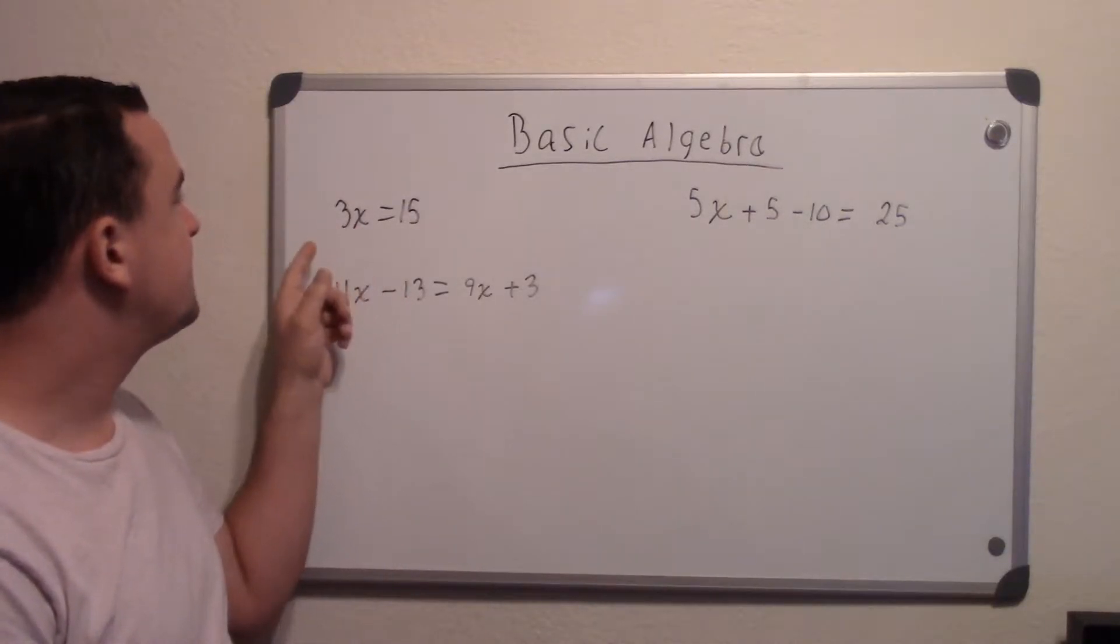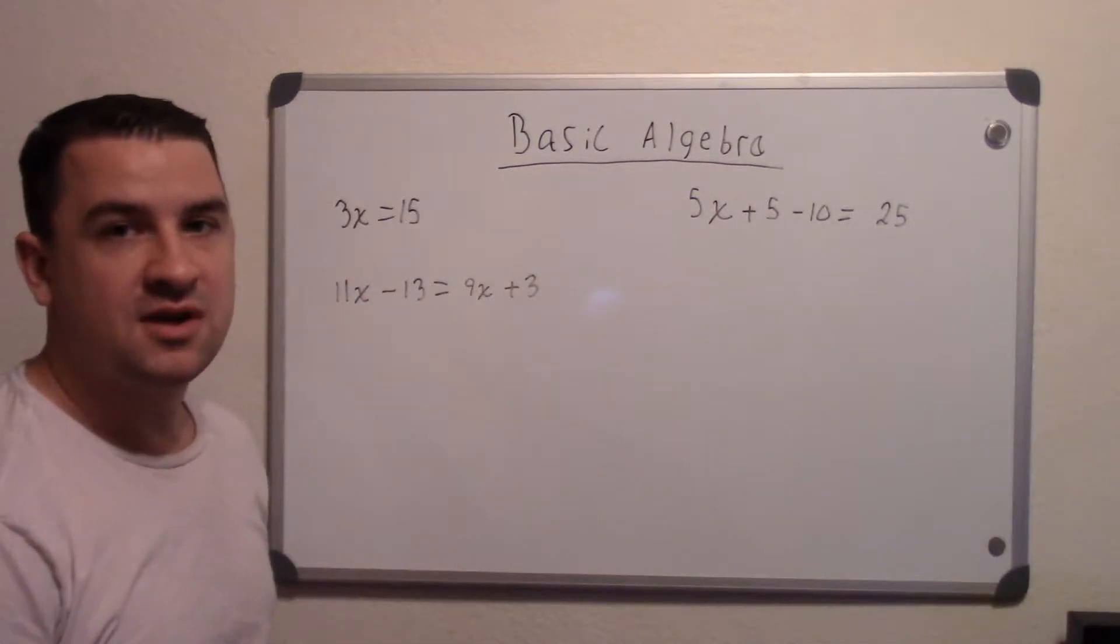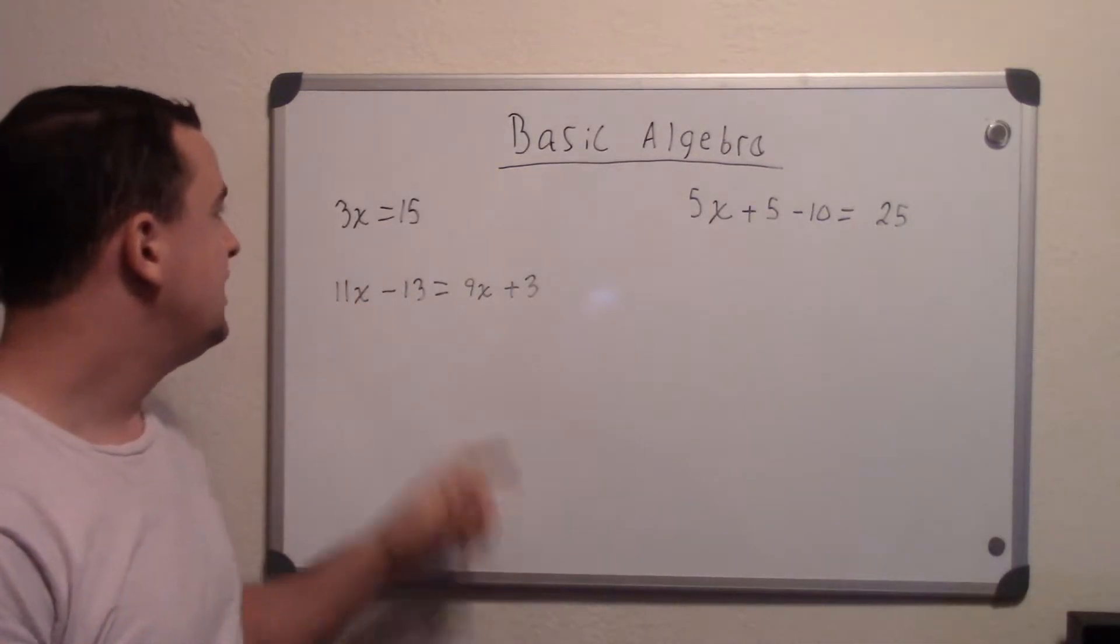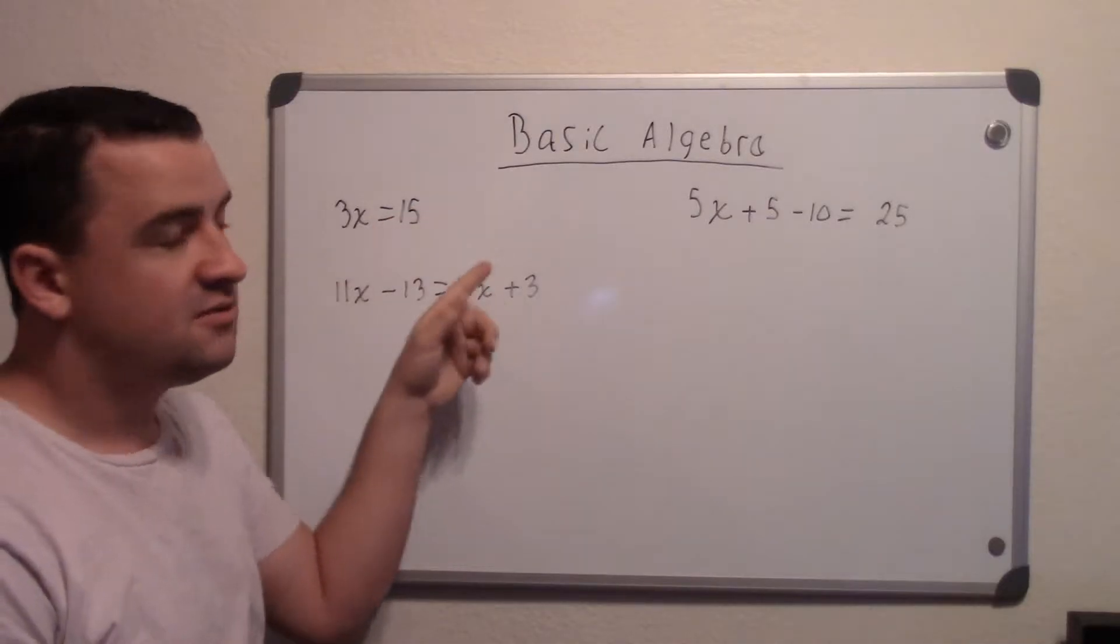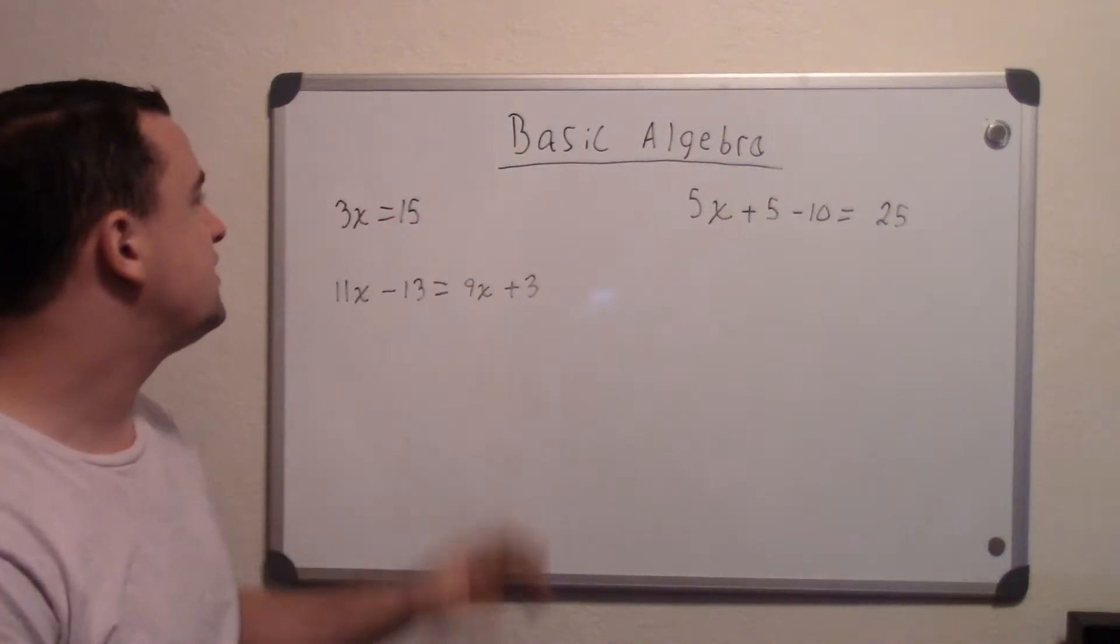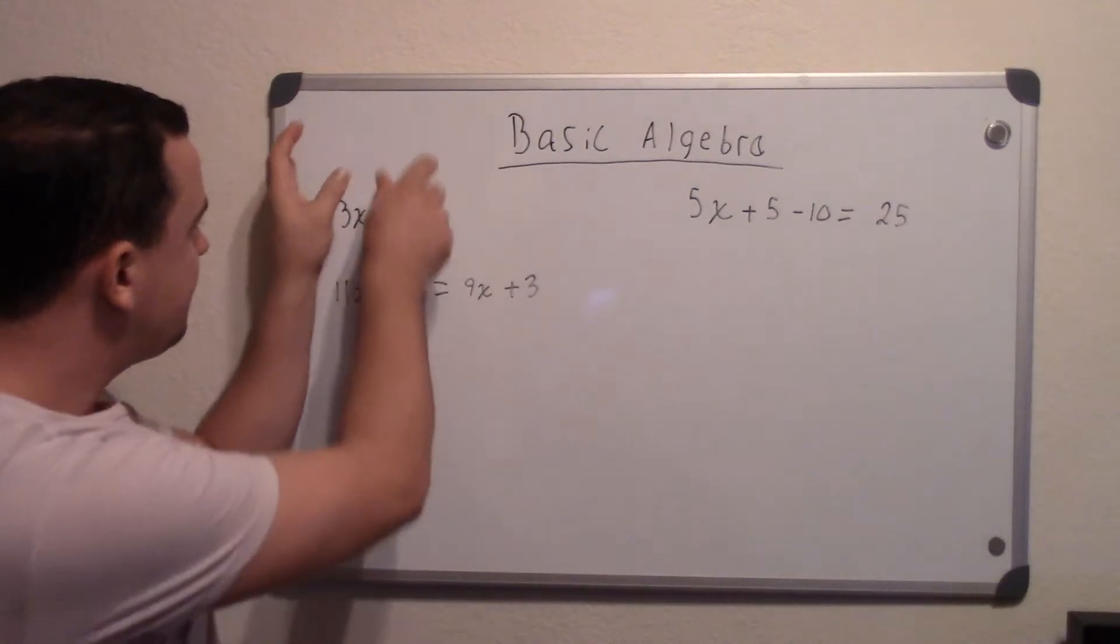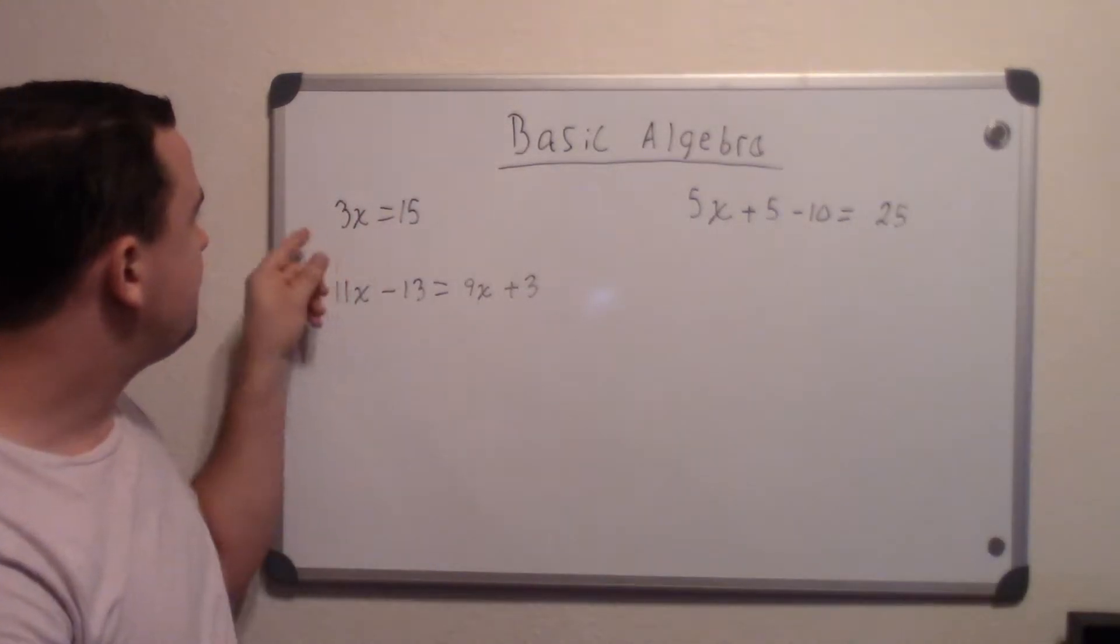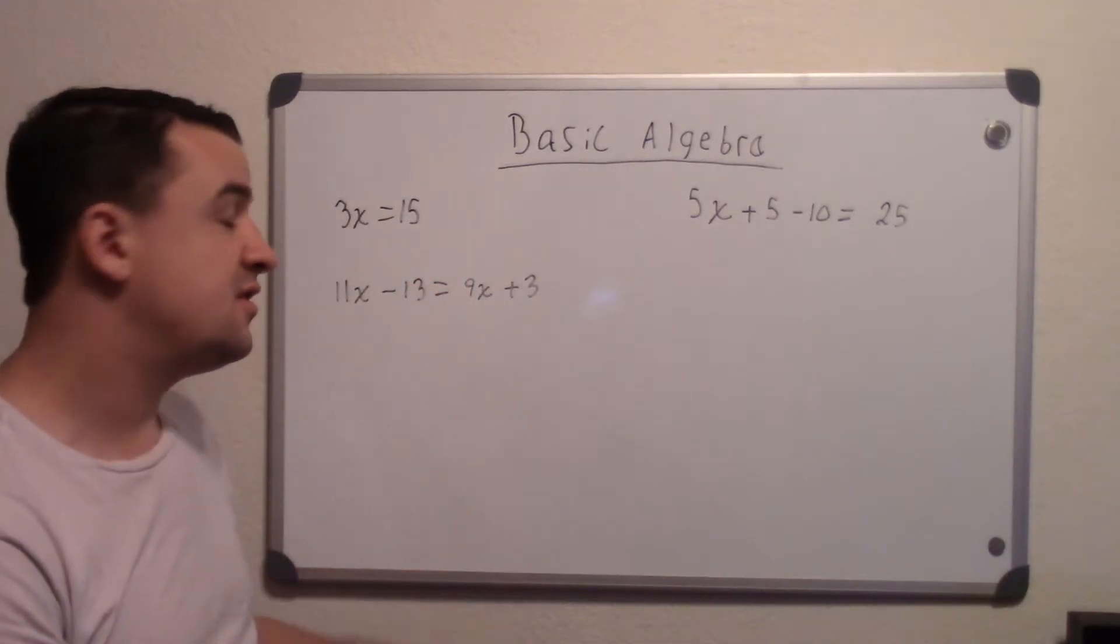So x is being multiplied by 3. The opposite of multiplication is division. So we're going to divide by 3. And whatever you do to one side, you have to do the same thing to the opposite side. Because if you just do it to one, you ruin the whole equation. So you have to keep these equal. This is essentially, they have a ratio to each other. So if you do it to both sides, you keep that ratio the same.